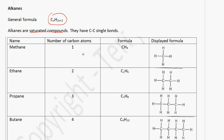The first member of this homologous series has one carbon atom. If we use the general formula, we would not write the 1. So we put CH and it'll be 2 multiplied by 1 plus 2, which is 4. So that's how we got CH4. And the displayed formula is written as a carbon with 4 hydrogen atoms around it.